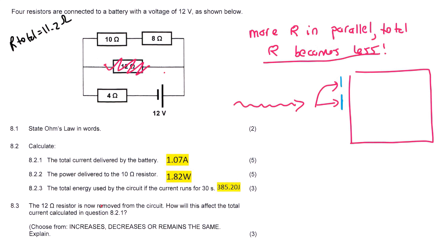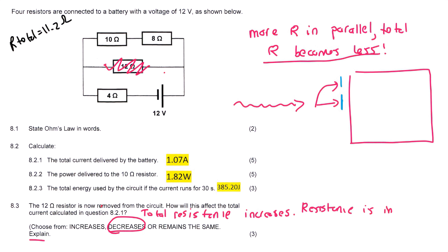But with this question we've got to be careful — they said they are going to remove the 12 ohm resistor. That's like the shop owner closing a door, which makes it more difficult for people to flow. So when you take a resistor in parallel away, you are actually making the total resistance in the circuit larger. If the total resistance becomes larger, it becomes more difficult for electricity to flow, so the current will actually become less — the current will decrease. The reason: the total resistance increases, and resistance is inversely proportional to current. When resistance goes up, current goes down. That's it for this one, guys — thank you very much for watching.